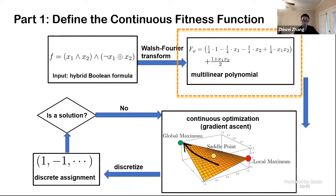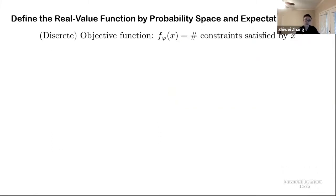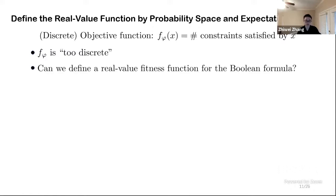The first and the most important part of our framework is how we define this continuous fitness function. Remember that the discrete objective function is just the number of satisfied constraints. As we discussed before, this function is too discrete so that it fails to capture some small progress towards satisfying non-CNF constraints.